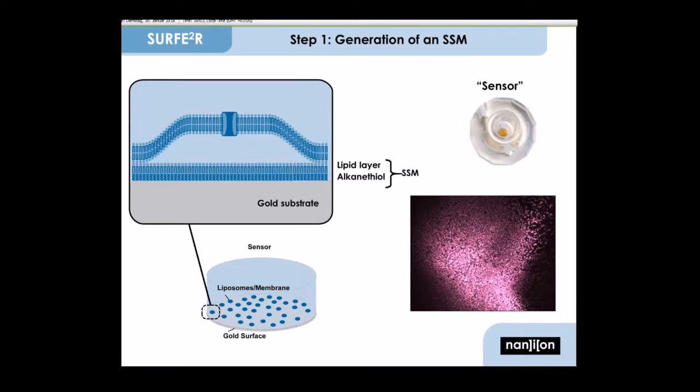On top of this lipid layer, the sample that is containing the protein of interest is absorbed. This can be any kind of membrane vesicles or proteoliposomes. All these steps are performed by simple pipetting. SSMs are very stable and not limited in size.